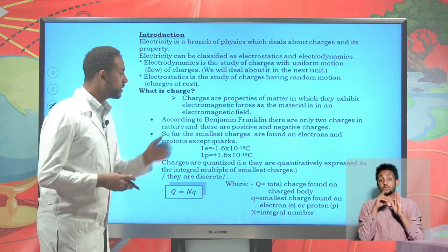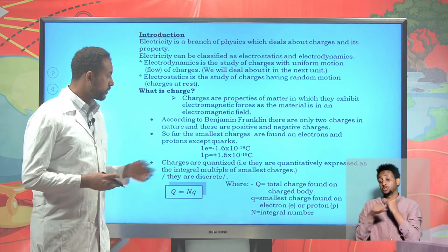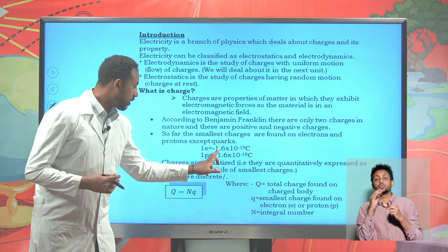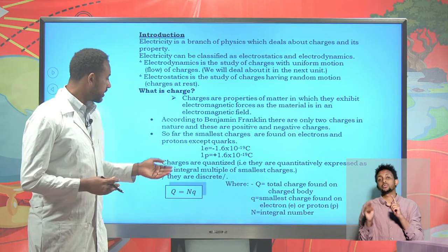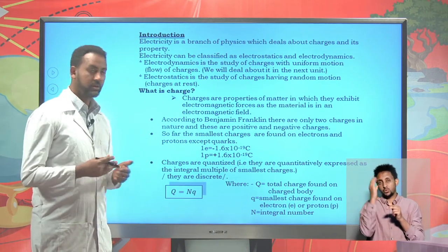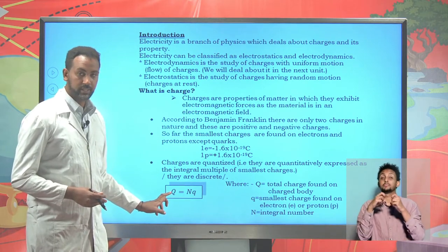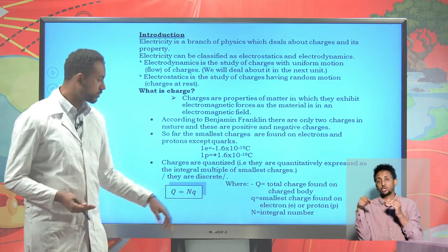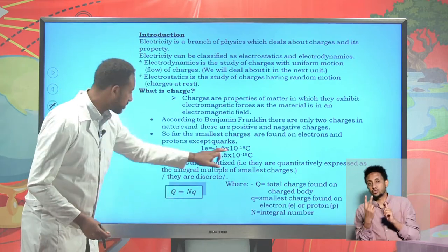There are only two charges in nature: positive and negative charges. The smallest charge known so far is the charge found on electrons and protons — except quarks, which have one third of the charge. The charge on electrons and protons is 1.6 × 10⁻¹⁹ coulombs. Negative sign represents electrons and positive sign represents protons. Charges are quantized, meaning they are integral multiples of the smallest amount of charge. Mathematically, Q = nq, where n is an integer (positive or negative).